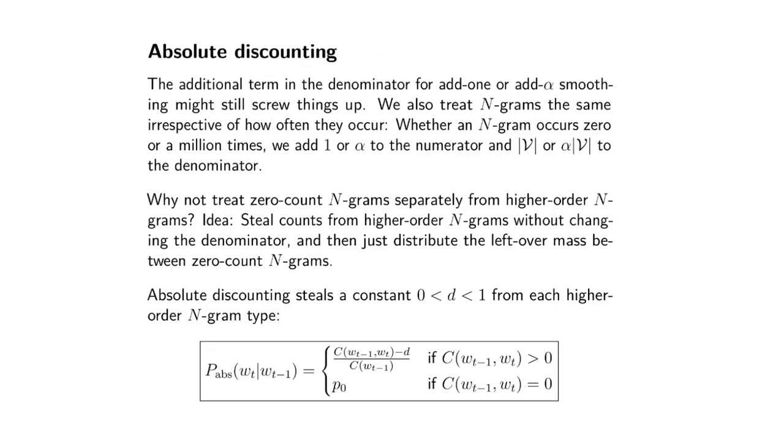That would mean treating n-grams that occur zero times completely differently from n-grams that occur more often. This is what's called absolute discounting.